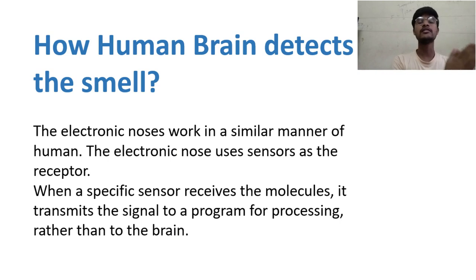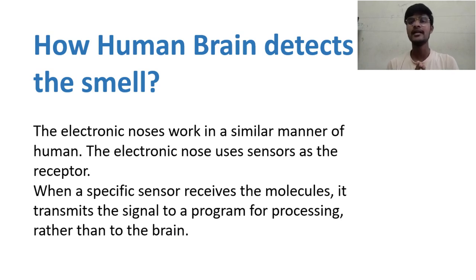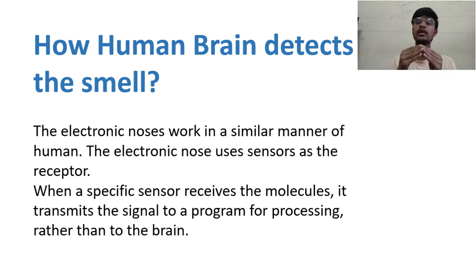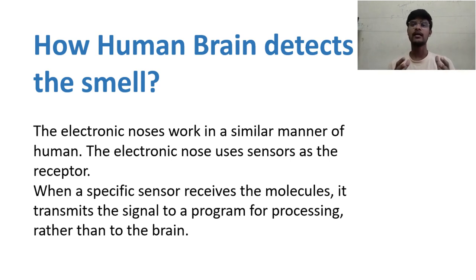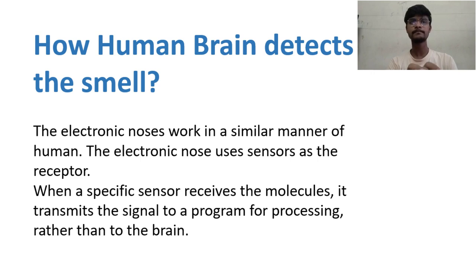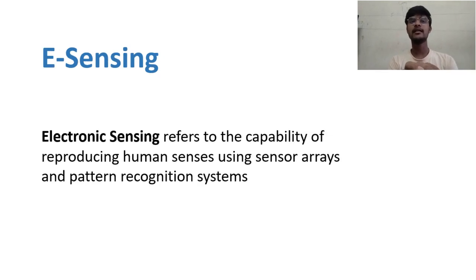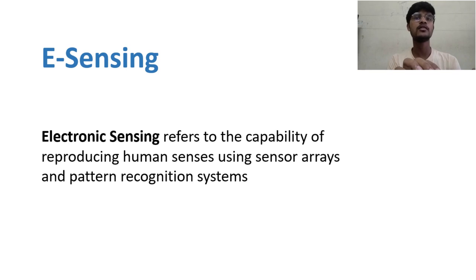Similarly, the electronic nose runs on the same principle, but with a key difference. Instead of receptors, the electronic nose consists of sensors — a wide array of sensors that detect different chemicals. And instead of the human brain, the electronic nose has a computing system that analyzes all the data and identifies what compound was detected. E-sensing is a popular term used when discussing electronic noses — it refers to the capability of reproducing human senses using sensor arrays and pattern recognition systems.